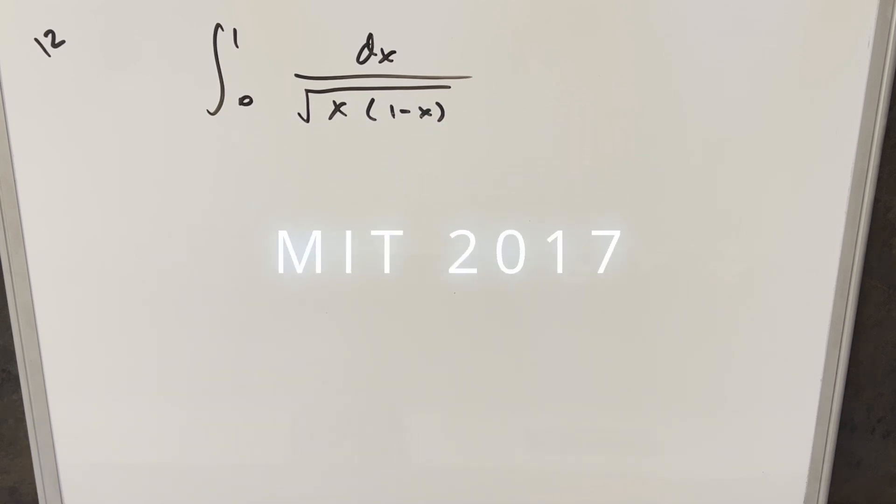Okay, we have our quick integral today. This one's from MIT 2017, number 12. We have the integral from 0 to 1, 1 over square root x times 1 minus x dx.